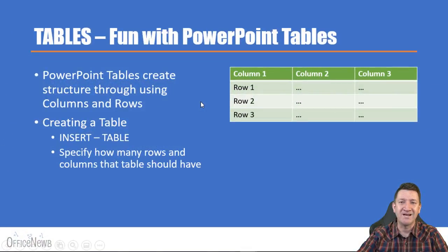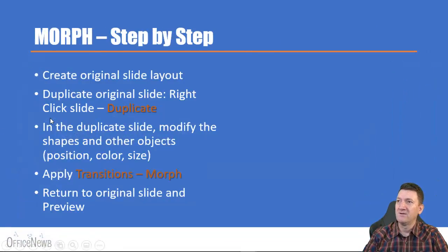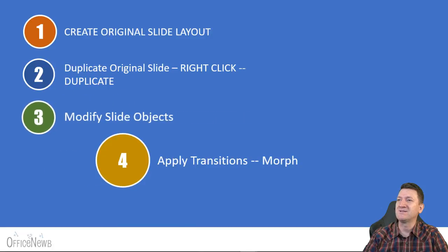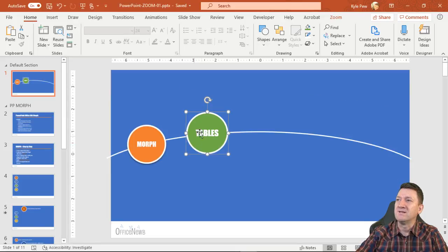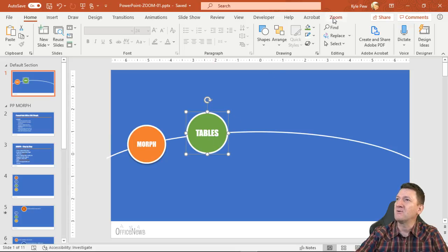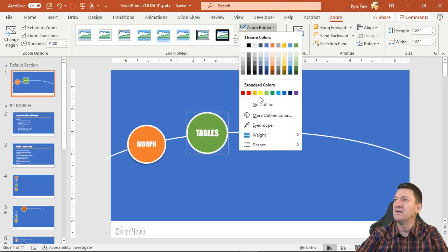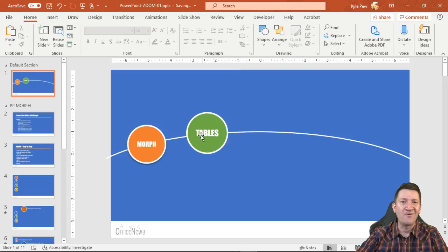I hit F5 to show the presentation — I've got my custom Tables link, I click it and it takes me to the table section, then takes me back. I can go to Morph and navigate through those slides. Now one last thing: the zoom creates a border around the image which I don't care for. I'll select it, go to the Zoom tab, choose Zoom Border, and set it to No Outline. There it is — no border around the image.